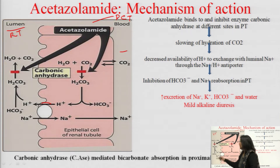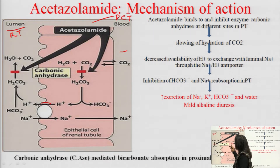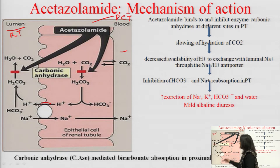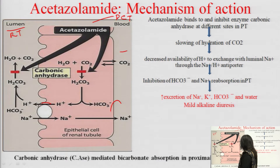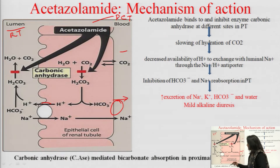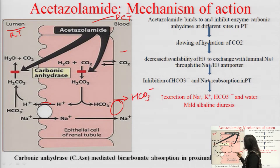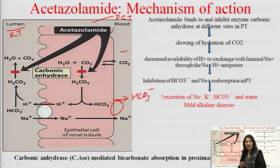The water and carbon dioxide diffuse inside the cell. Again, in the presence of carbonic anhydrase enzyme inside the cell, carbonic acid is formed. This carbonic acid dissociates into hydrogen ions and bicarbonate ions. The bicarbonate then goes from the cell into the interstitial fluid and thus into the blood — so reabsorption of bicarbonate occurs.